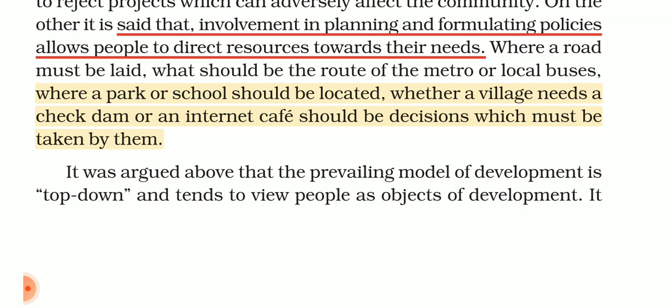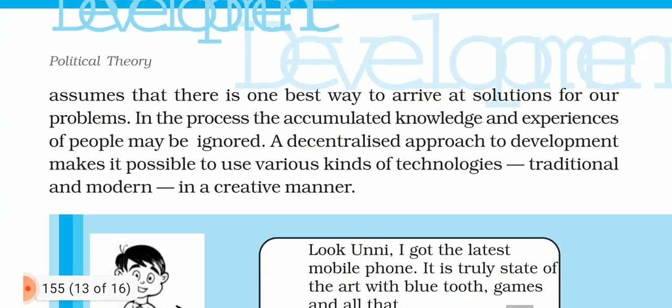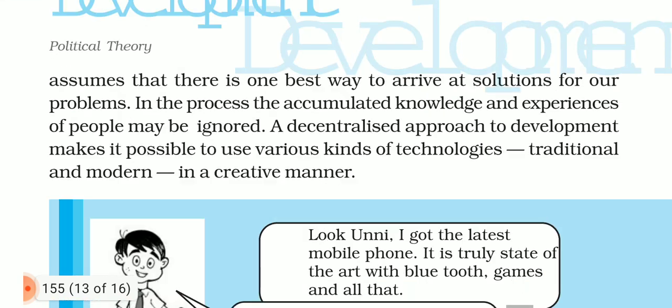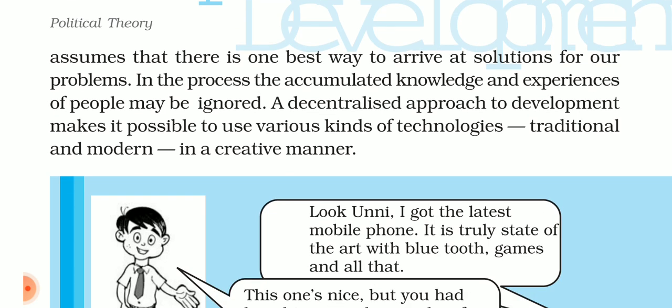It was argued that the above prevailing model of development, which is a top-down model, will take away the people's objective of development — particularly the common people. It is assumed that there is one best way to arrive at a solution for our problems. In this process, the accumulated knowledge and experiences of people may be ignored.